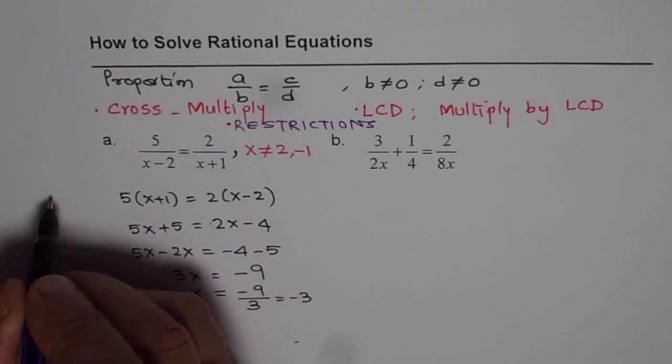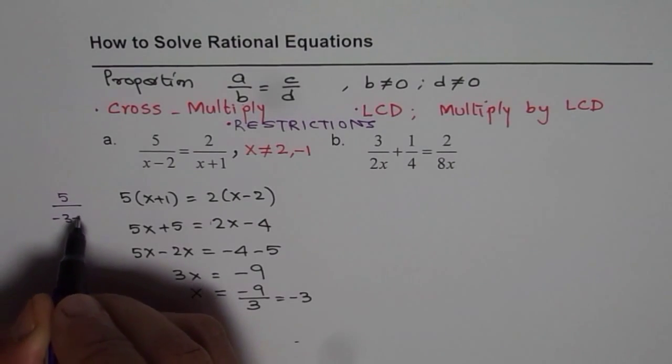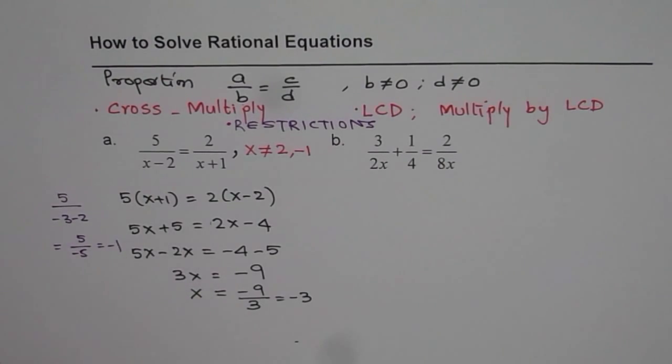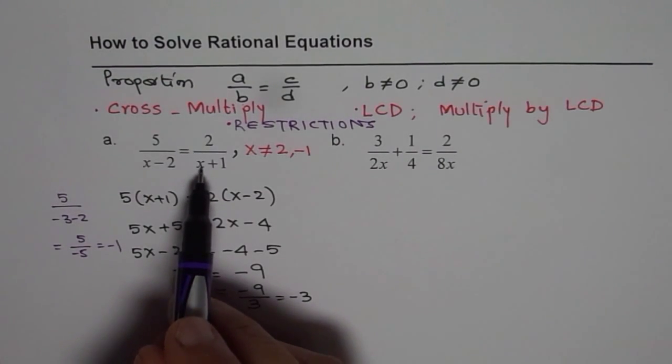So what do I get? I get 5 over minus 3 minus 2, that equals 5 over minus 5, which is minus 1.